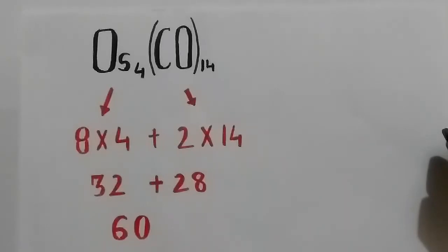One osmium atom contributes 8 valence electrons. Since we have 4 osmium atoms, the total valence electron from osmium is 32. Each carbonyl group contributes 2 electrons, which is multiplied by 14, and the total electron count we get is 60.